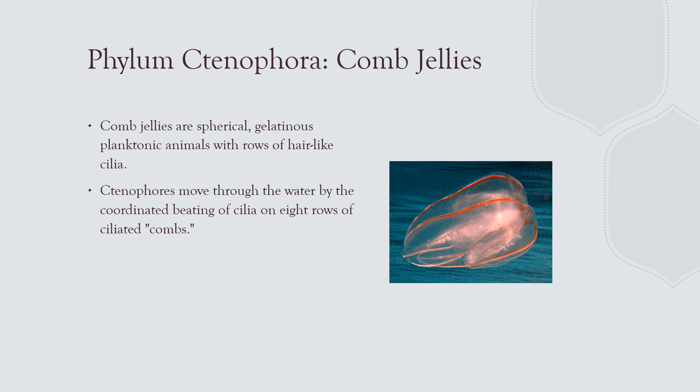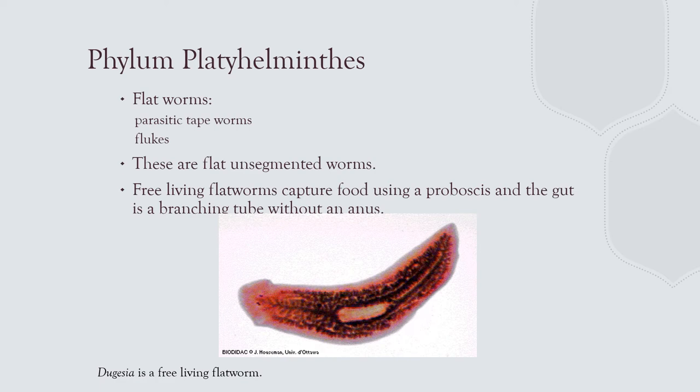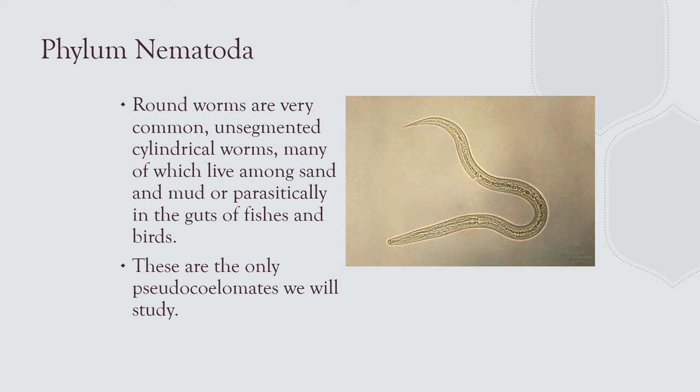Ctenophora — comb jellies — don't have the stingers that cnidarians have. They can also bioluminesce to attract plankton, which they eat. Platyhelminthes are not huge in the marine environment; they're very common in freshwater systems, and many are parasitic like tapeworms. Nematodes are roundworms.